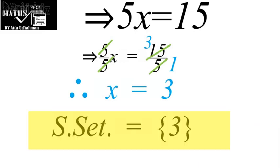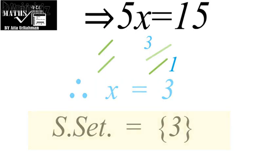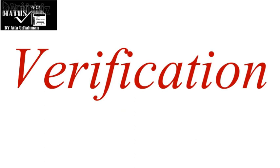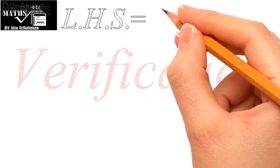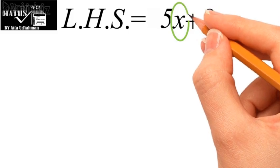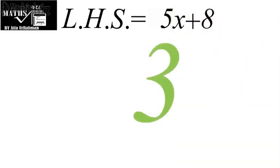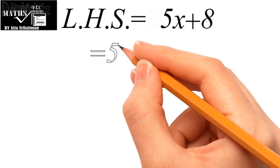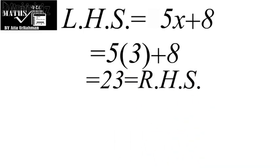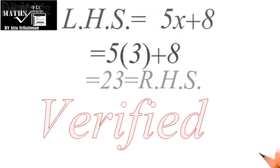Tabulating this value in the solution set gives us the solution set of the linear equation. To verify: taking the left hand side of the given equation, that is 5x plus 8, and replacing x by 3, we get 5 times 3 plus 8, which is equal to 23, which equals the right hand side. This verifies that we have found the correct solution.